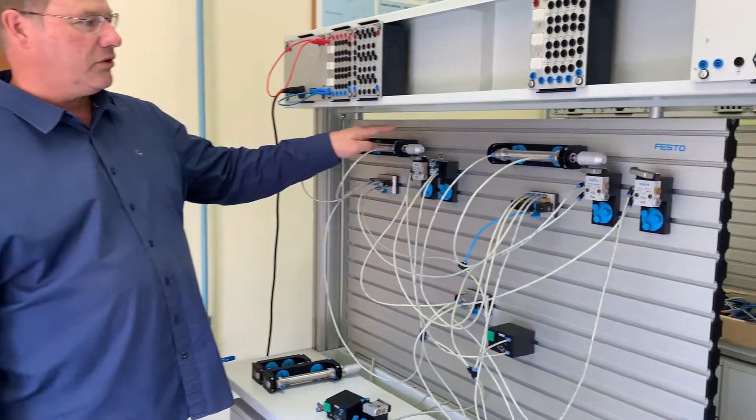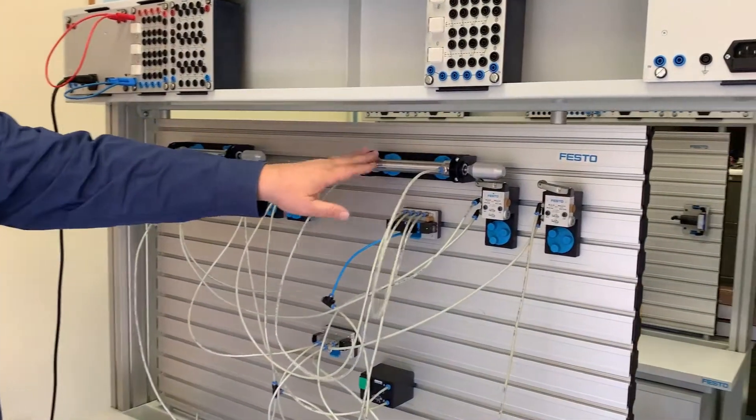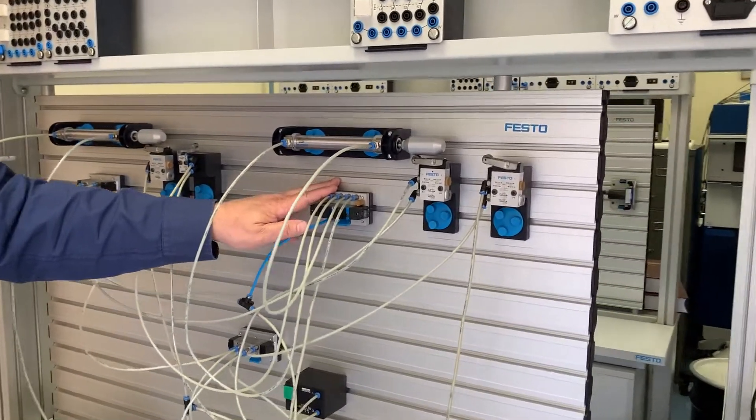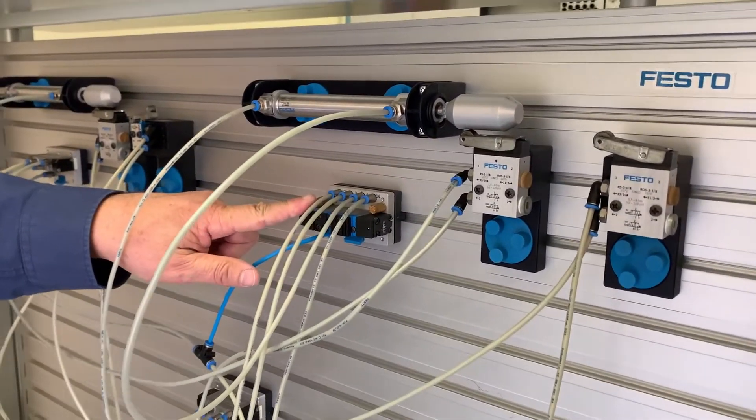So you can see on this circuit we have two double acting cylinders that both have air supplies and as you know when we have a double acting cylinder we need a five two-way valve.